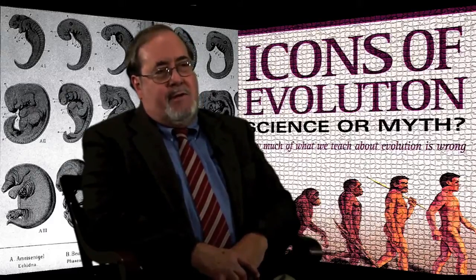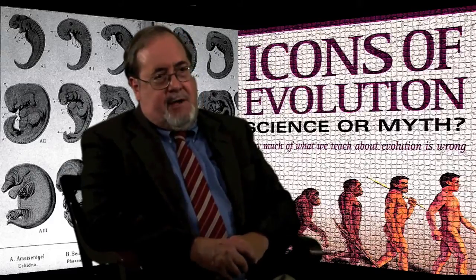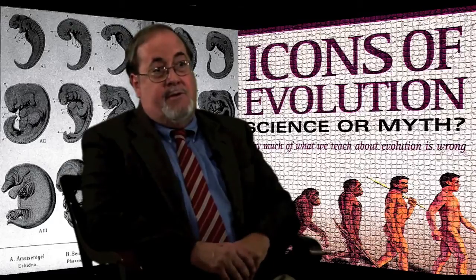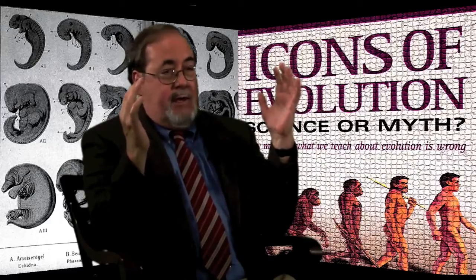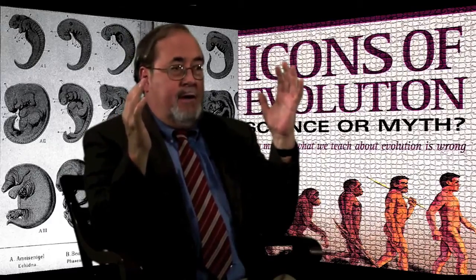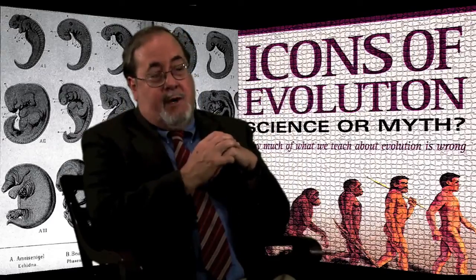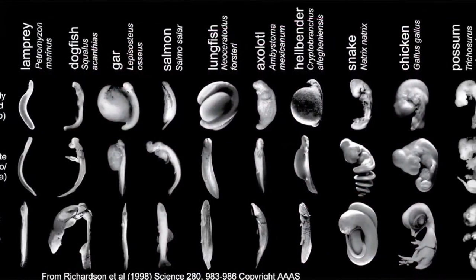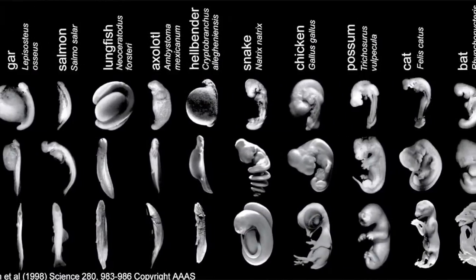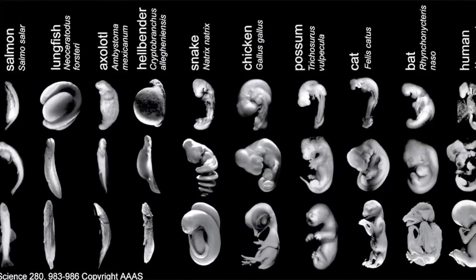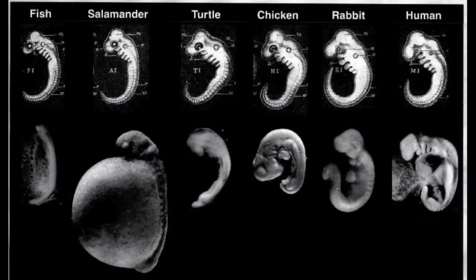There are three reasons his drawings misrepresent the evidence. First of all, the embryos that he portrays as being virtually identical are not — a good embryologist can see the differences. In 1997, British biologist Michael Richardson and his colleagues published a now famous article in Anatomy and Embryology comparing Haeckel's drawings to actual embryos and showing that Haeckel faked the data.